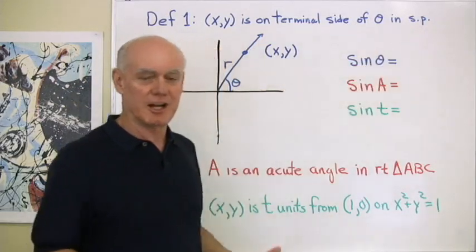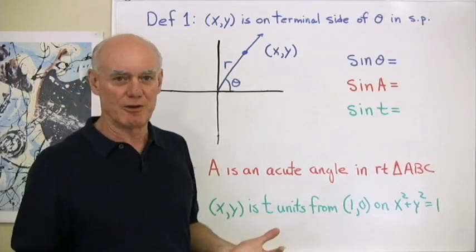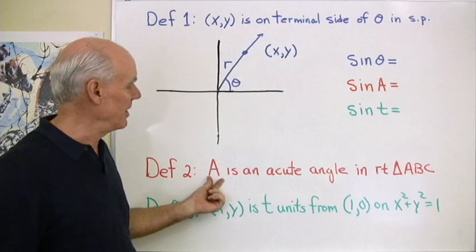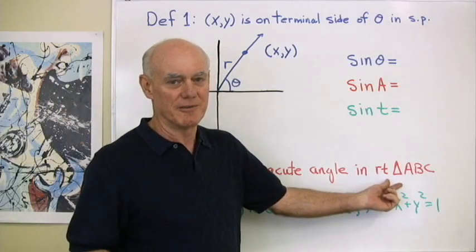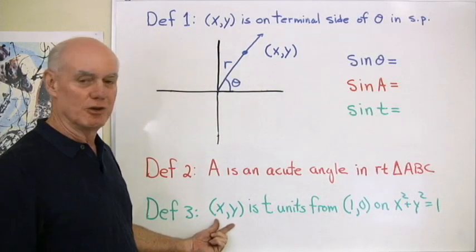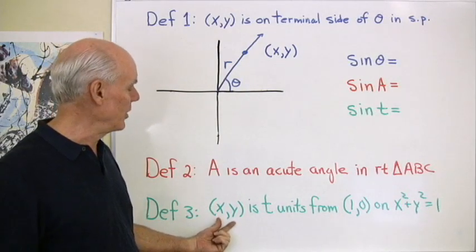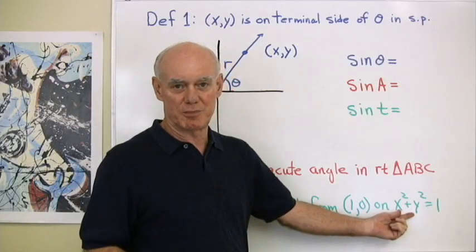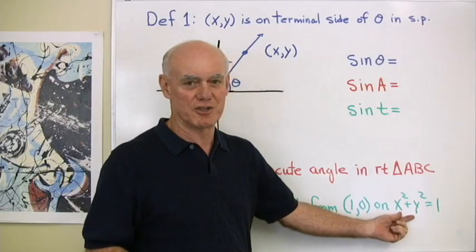But you might be taking the class in high school and it might be just part of your Algebra II class, then you have this definition in which angle A is an acute angle in right triangle ABC. Or you could be taking it as part of a pre-calculus class and you look at the trig functions in terms of a point XY that's T units from (1,0) on X squared plus Y squared equals 1, which is the unit circle.